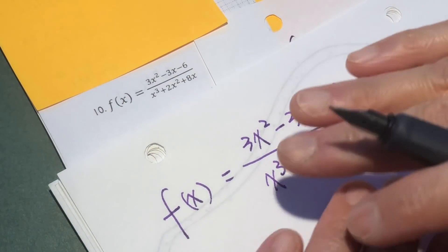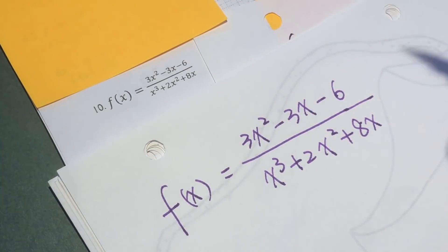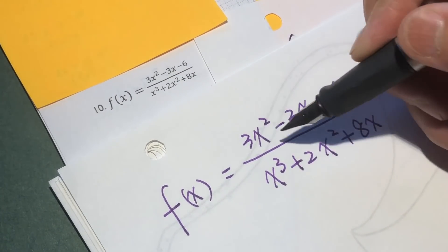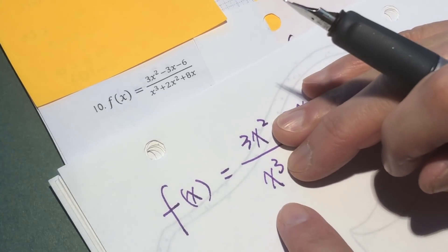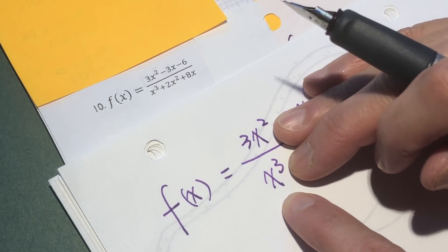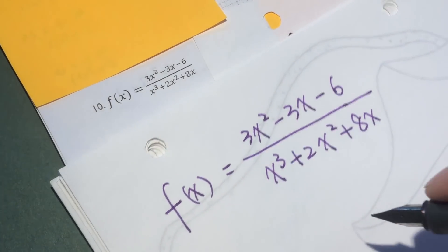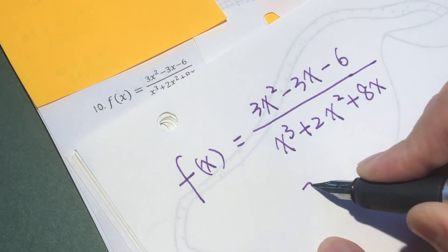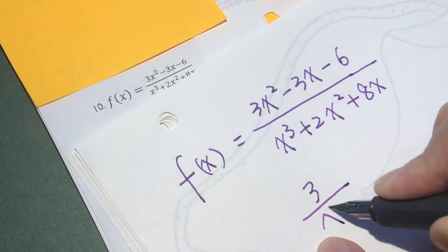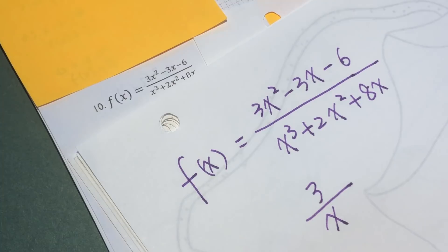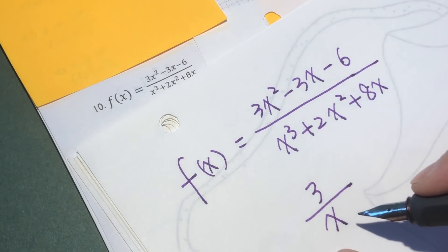So forget about all this below number. If we only see the upper part, or only the first, the highest degree, it will become something, we simplify it, become something like 3 over x. And this is a basic function.